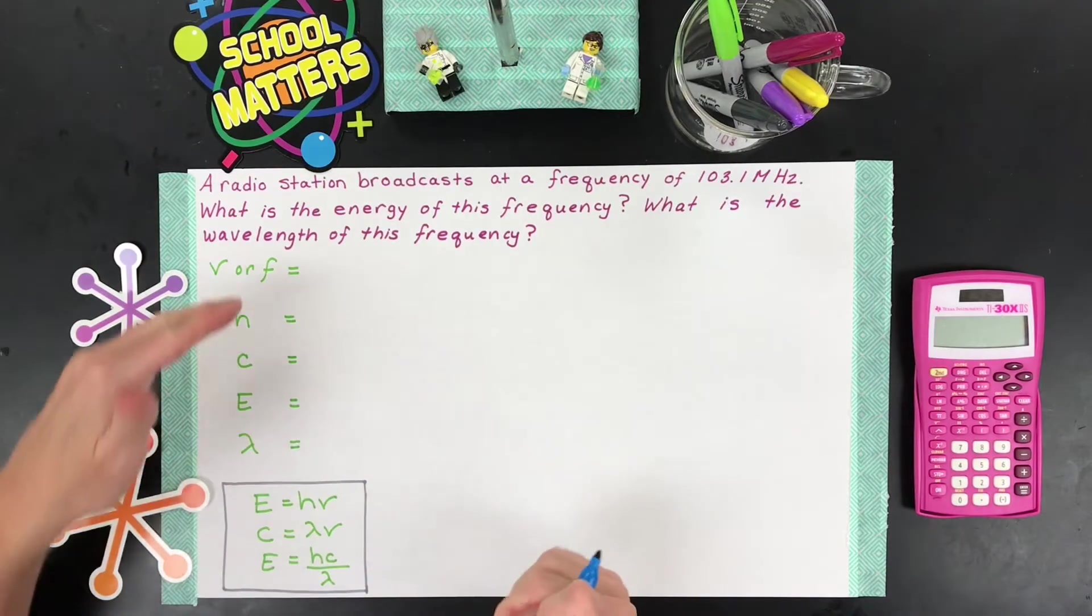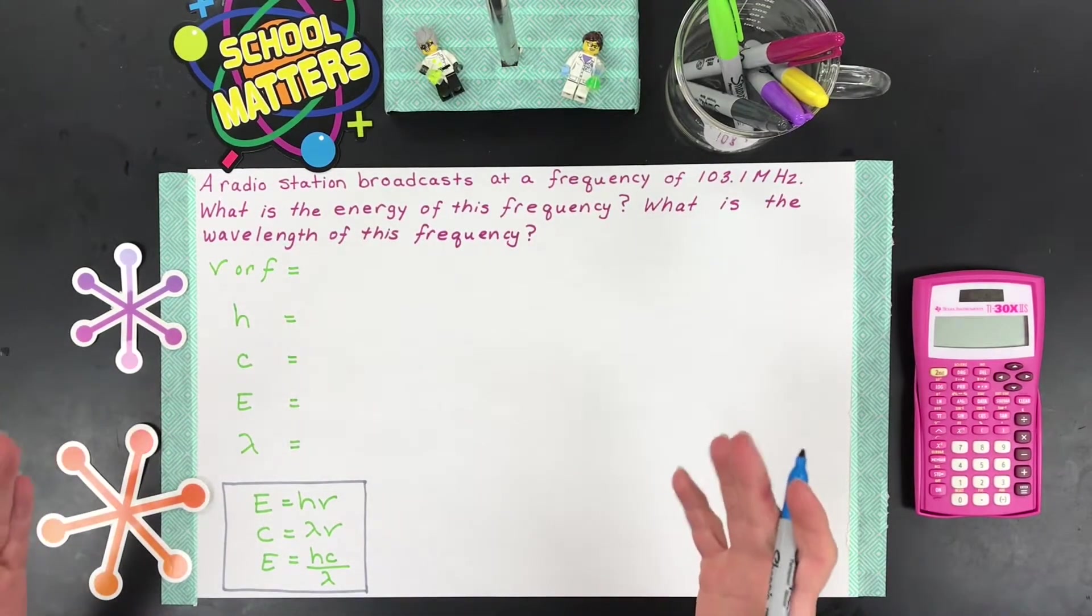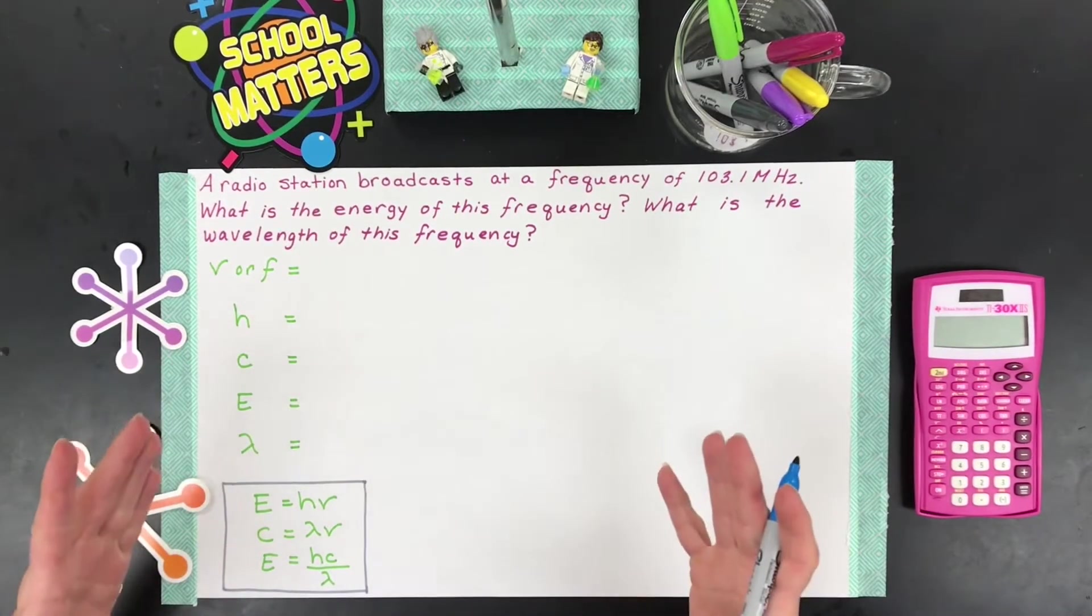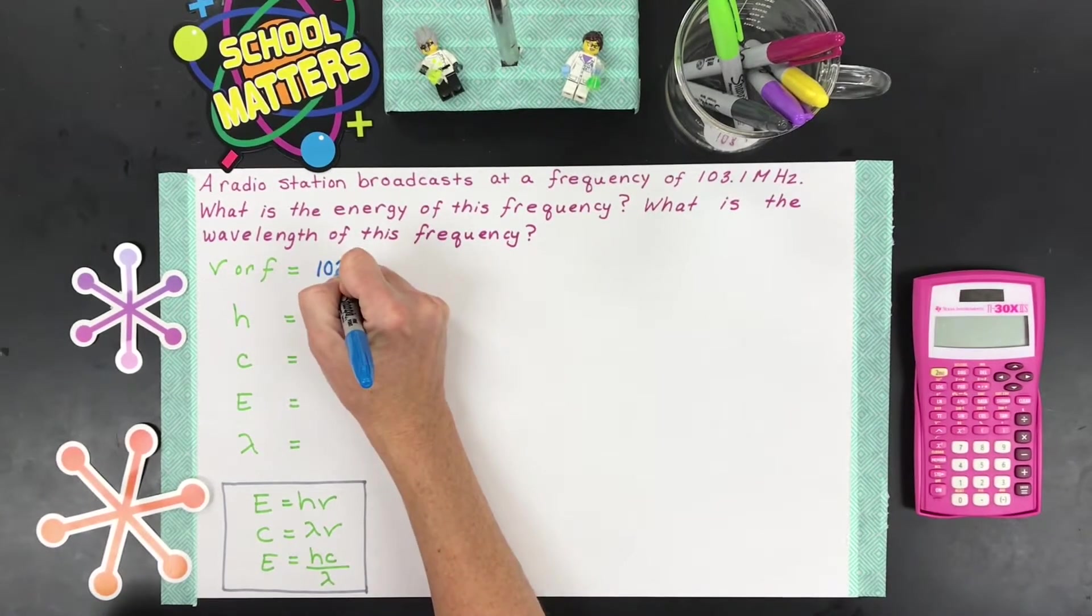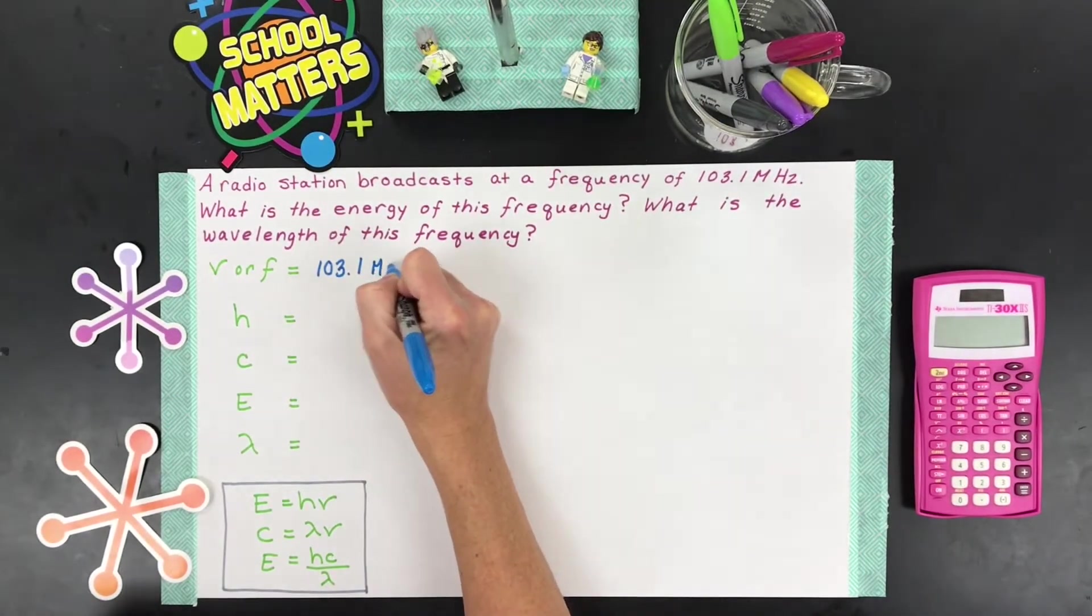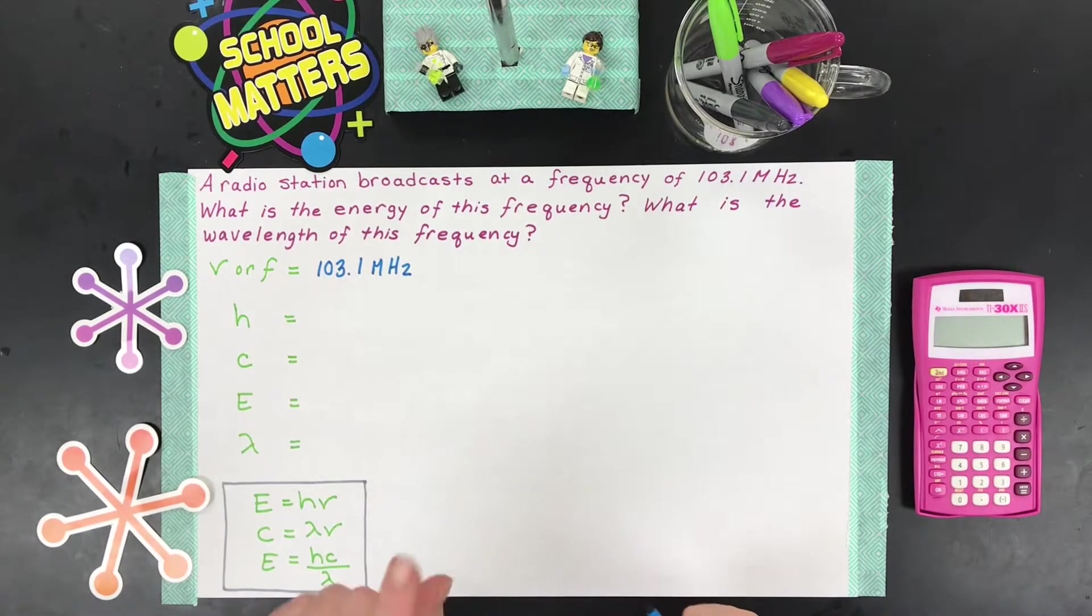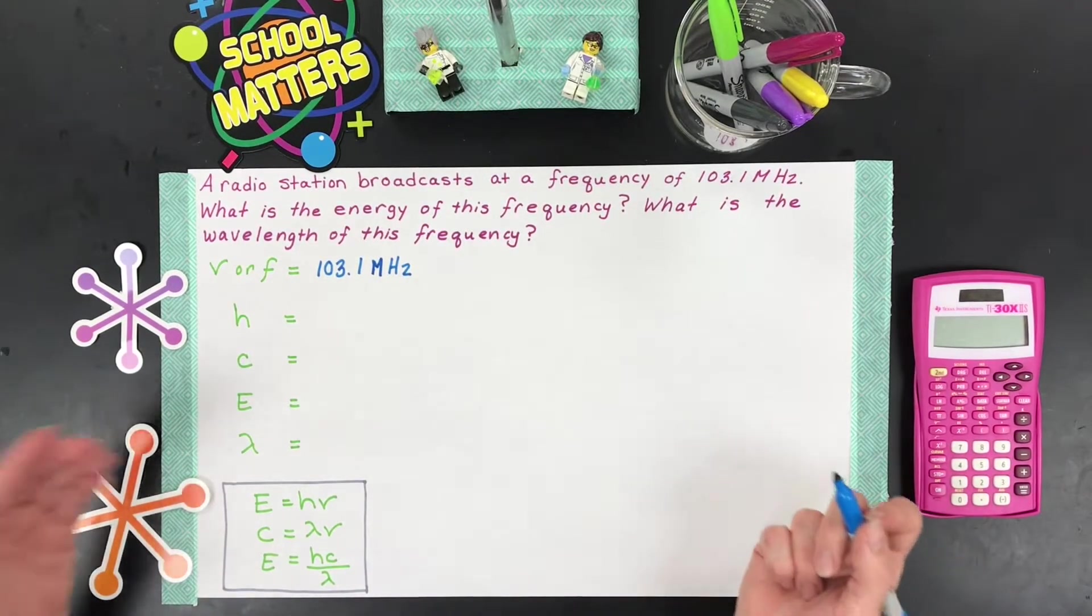So, first thing you want to do is write down all of your knowns and unknowns and your constants. The first thing is that we have nu or f, that stands for frequency, and we have that. That's the 103.1 MHz, that's the radio station's frequency. We'll deal with that MHz in a little bit because that is going to be an issue, but let's keep listing what we know and what we're trying to find.